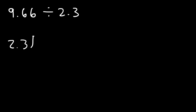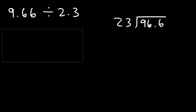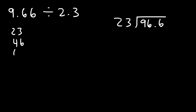Now let's try: 9.66 divided by 2.3. We write 2.3 on the outside and 9.66 on the inside, then move the decimal one unit to the right for each number. The problem becomes 23 on the outside and 96.6 on the inside. Let's make a list: 23, 46, 69, 92, 115, 138.